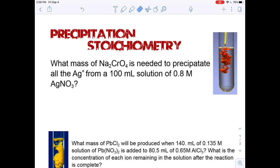Alright, we're going to do two problems on precipitation stoichiometry, and we have a reaction on the right side here that is showing a reddish precipitate or solid forming when a solution is added to another solution. The question is: what mass of Na2CrO4, or sodium chromate, is needed to precipitate all the Ag+ ions from a 100 milliliter solution of 0.8 molar AgNO3? Sounds very complicated, so we need to break this down.